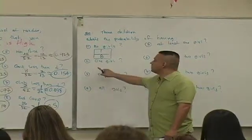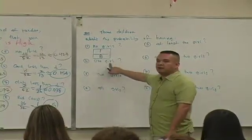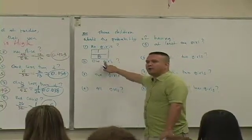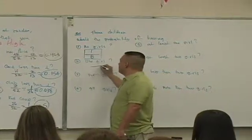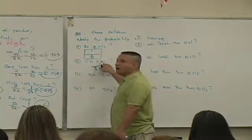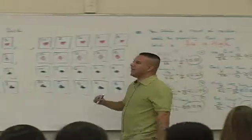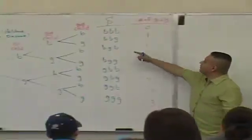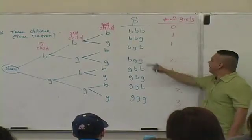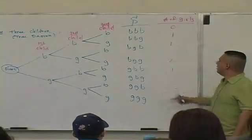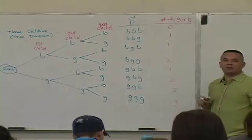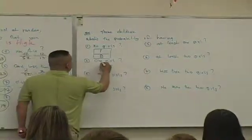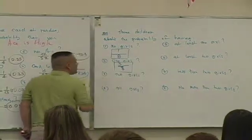Go to the next event. You're having now exactly one girl. How many outcomes in the sample space? Eight. How many outcomes consist of having exactly one girl? The BBG, the BGB, and the GBB — three outcomes. So this likelihood is three over eight.